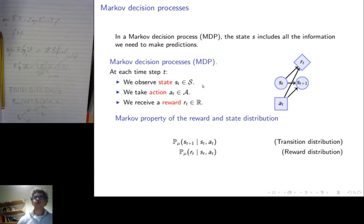So the Markov decision process can be defined as follows. At each time step t, we observe state st, we take action at, and then we receive a reward. The next state of the system only depends on the previous state and the current action.